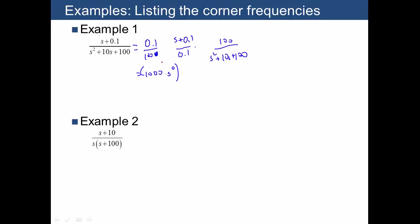That's the pure s term, and then we have two first order terms. If we list out our corner frequencies, we have a corner frequency of 0.1 in the numerator, and we have a corner frequency of omega_n equals 10 in the denominator. This is a second order term, so we need to put two down arrows there.